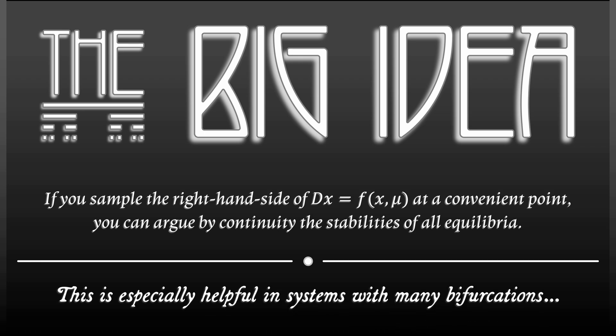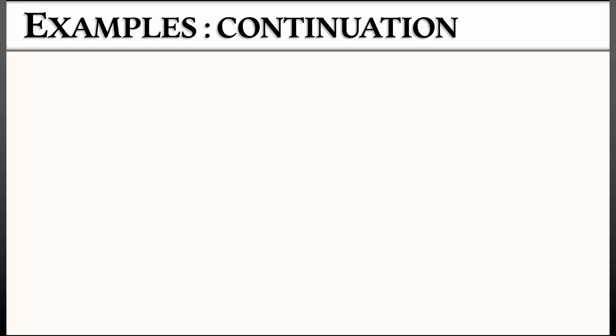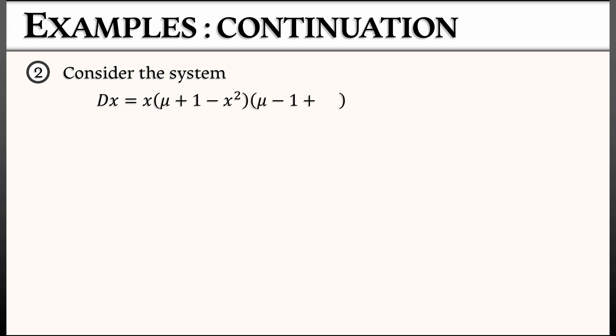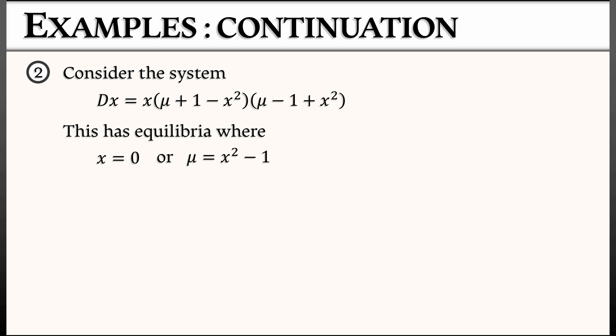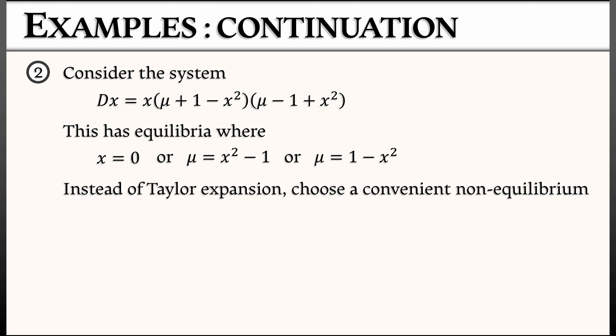Here's an example of that. Consider the system dx/dt equals x times (mu plus 1 minus x-squared) times (mu minus 1 plus x-squared). This comes factored already, so it's easy to identify the equilibria: x equals 0, or mu equals x-squared minus 1, or mu equals 1 minus x-squared. Instead of Taylor-expanding about each bifurcation, let's choose a convenient non-equilibrium point and evaluate the sign of the right-hand side there.